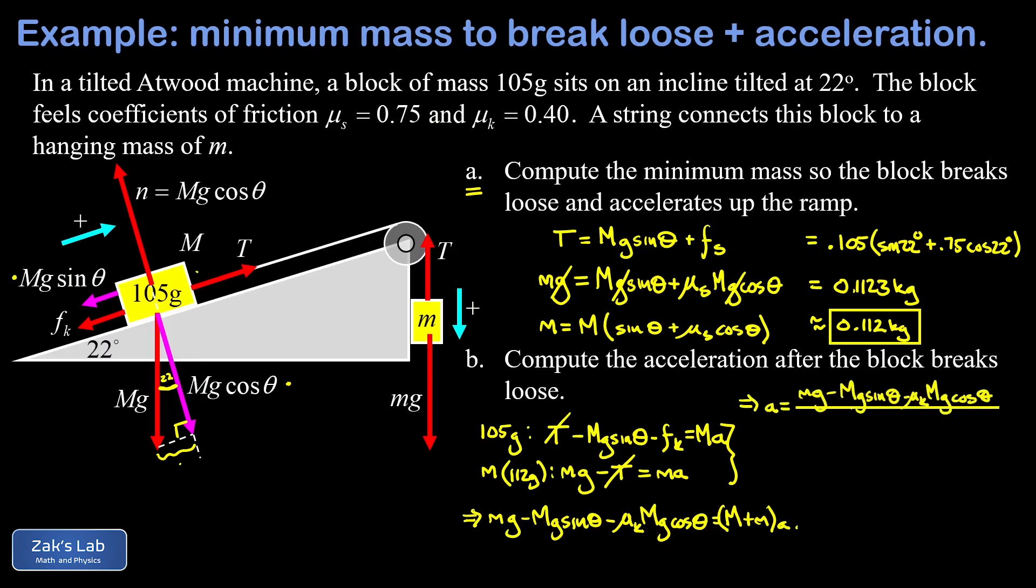So we're able to find a general expression for the acceleration of the system. So that's little mg minus big mg sine theta minus mu k big mg cosine theta divided by the sum of the two masses, big m plus little m.